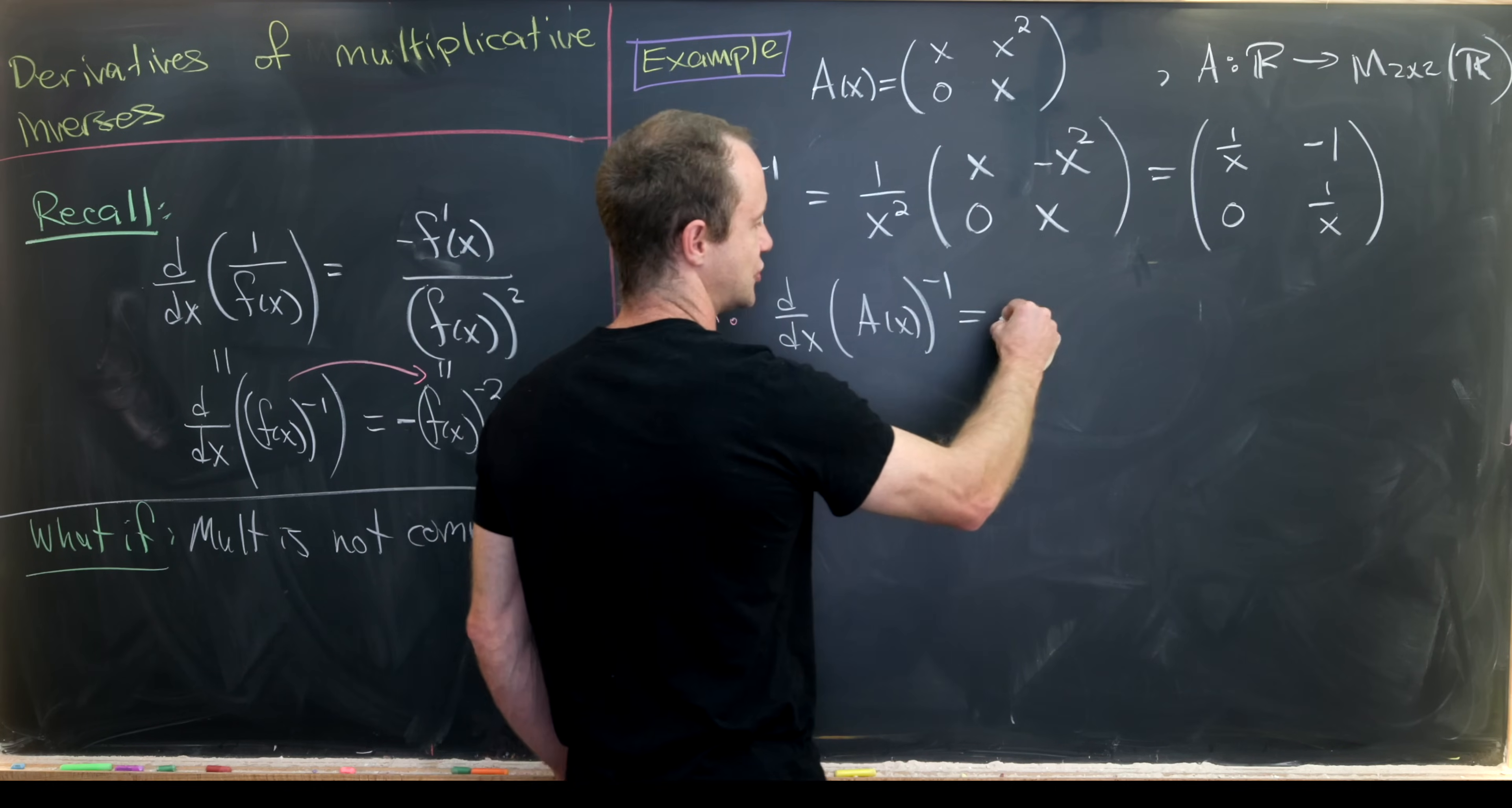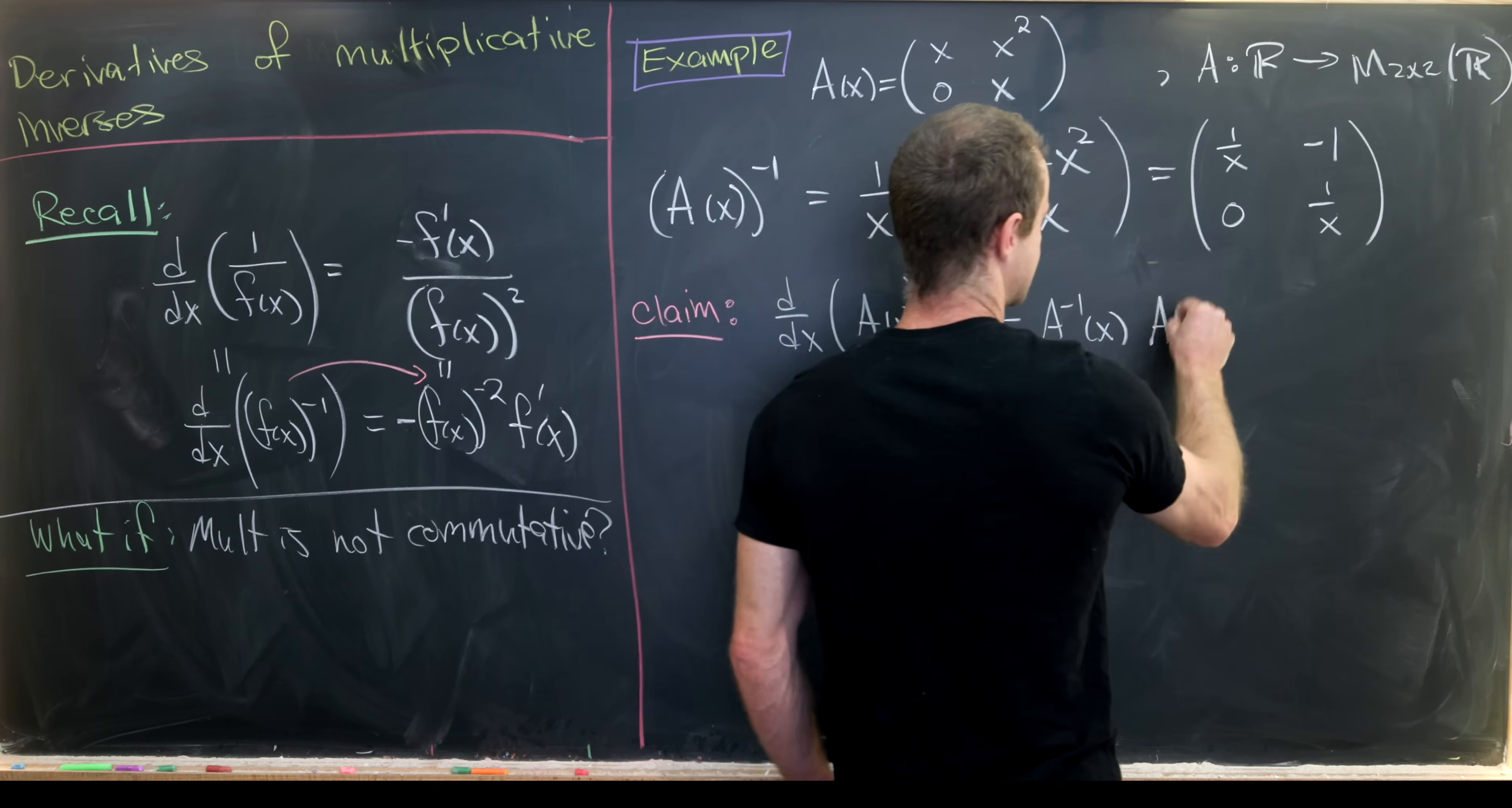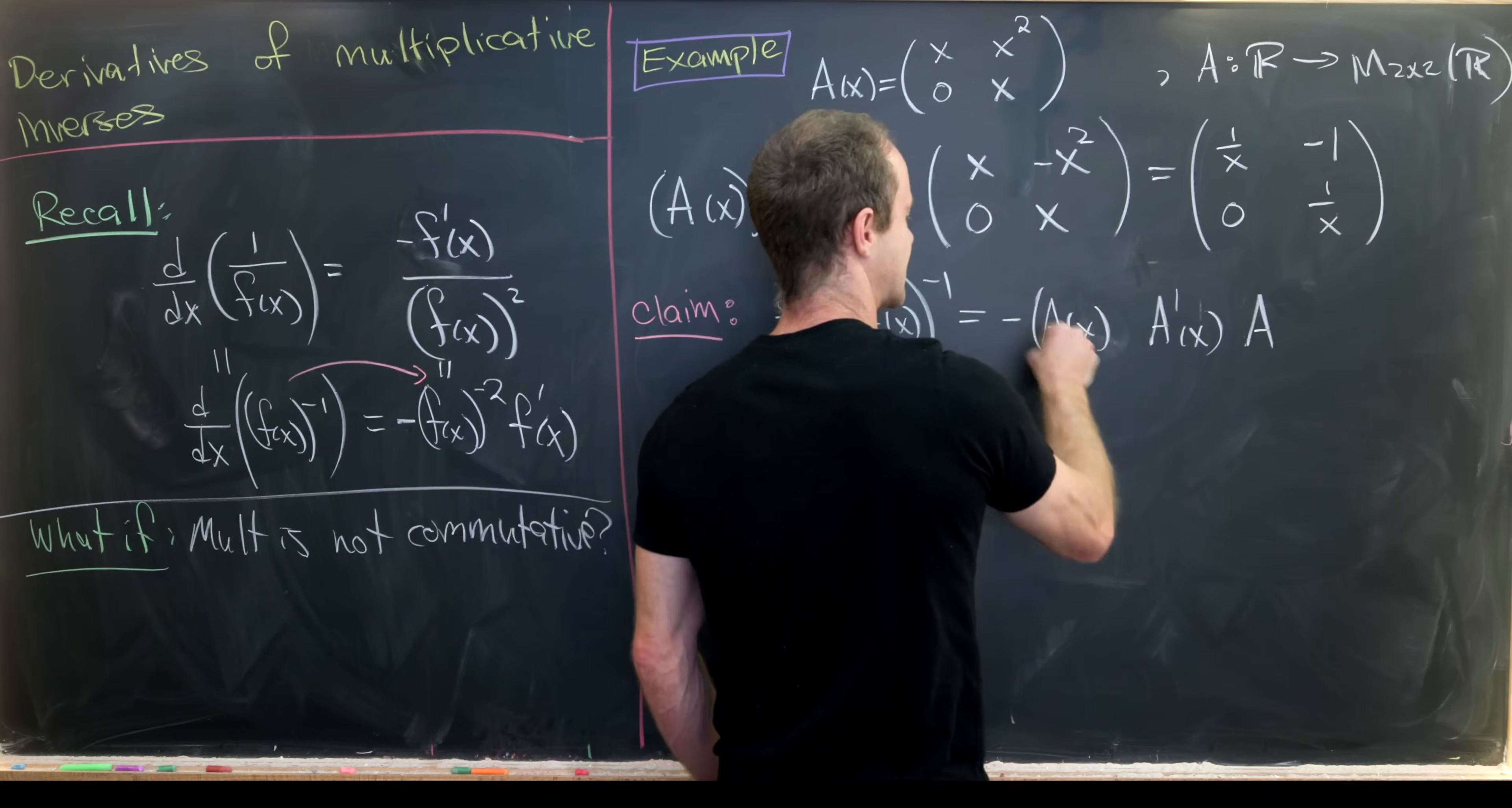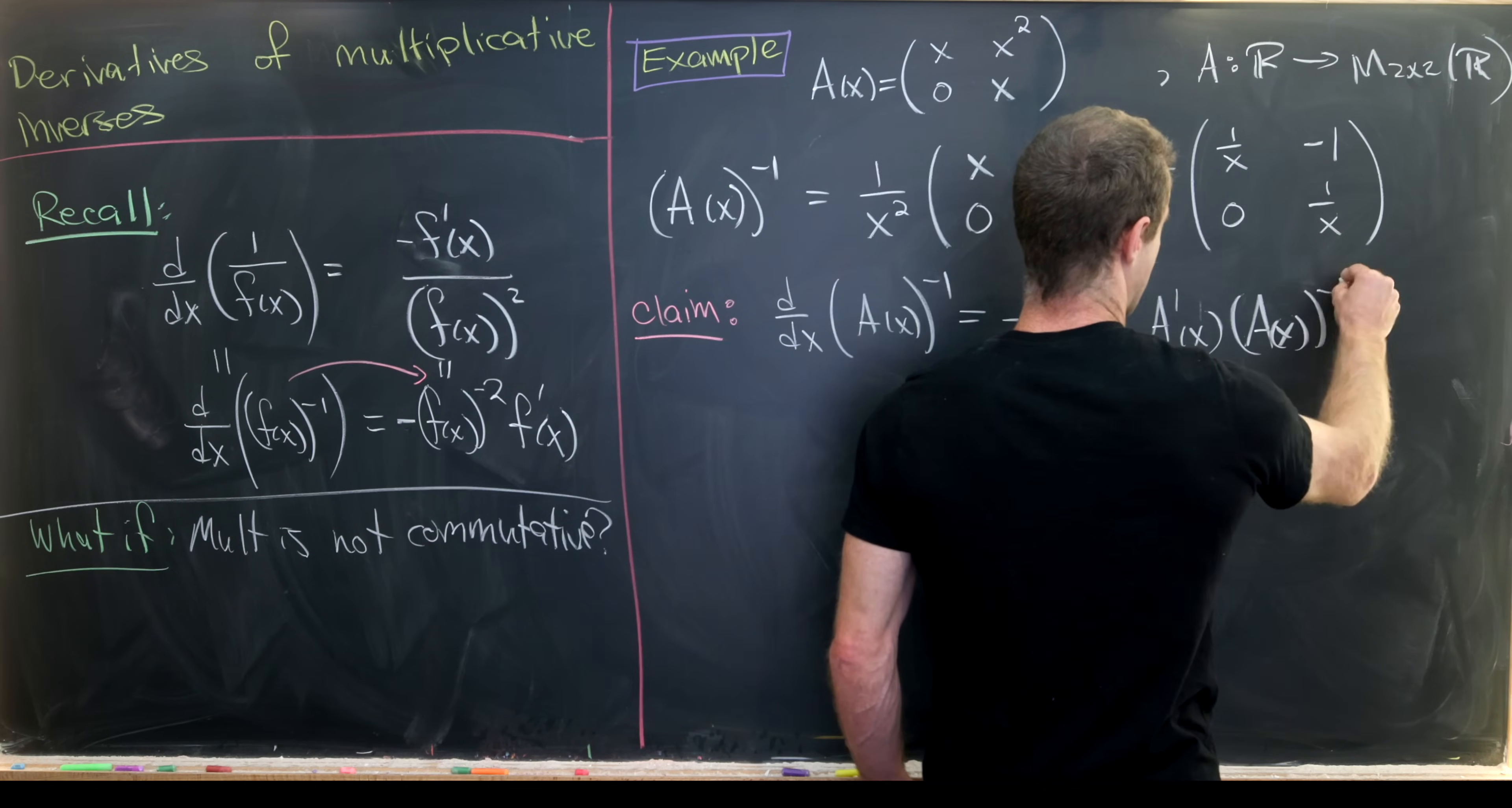That is the derivative with respect to x of A(x) inverse, the multiplicative inverse should be negative A inverse of x times A'(x) times A inverse of x. But I should be careful about my parentheses here. This is really A(x) inverse and this is also A(x) inverse.